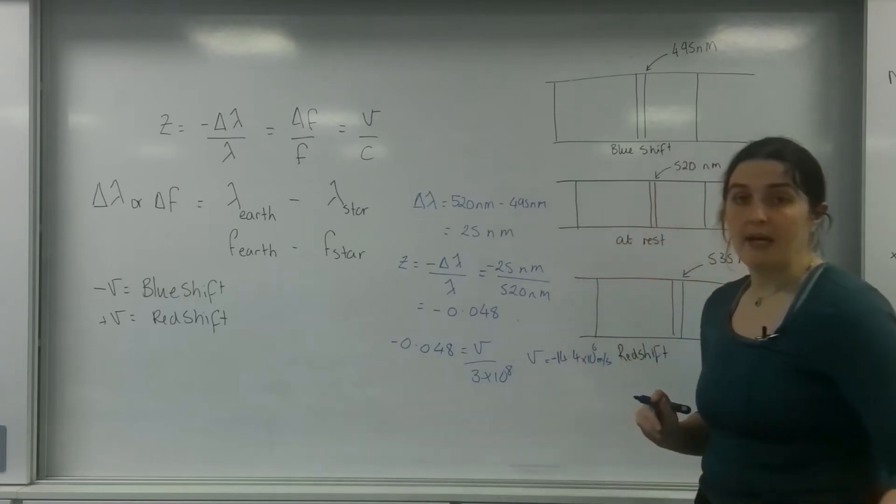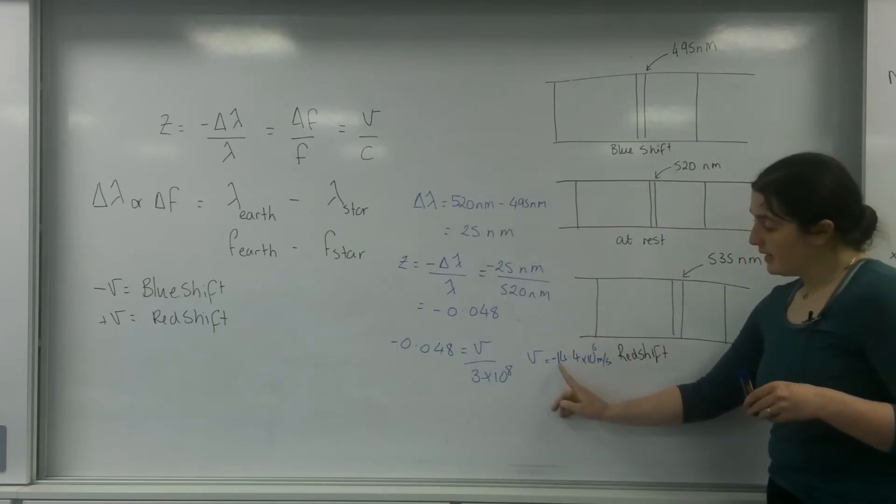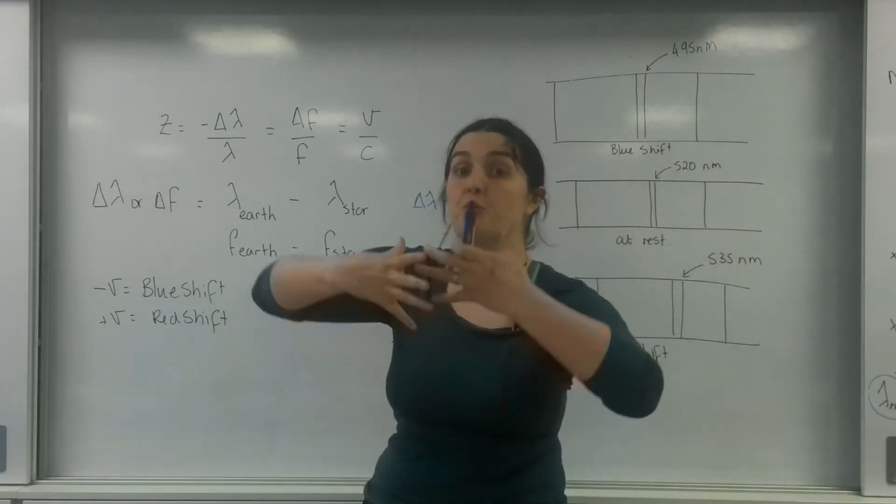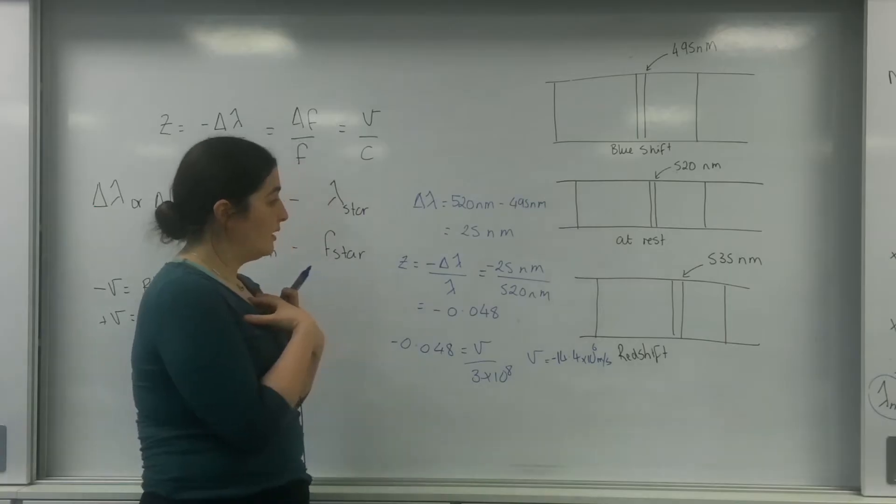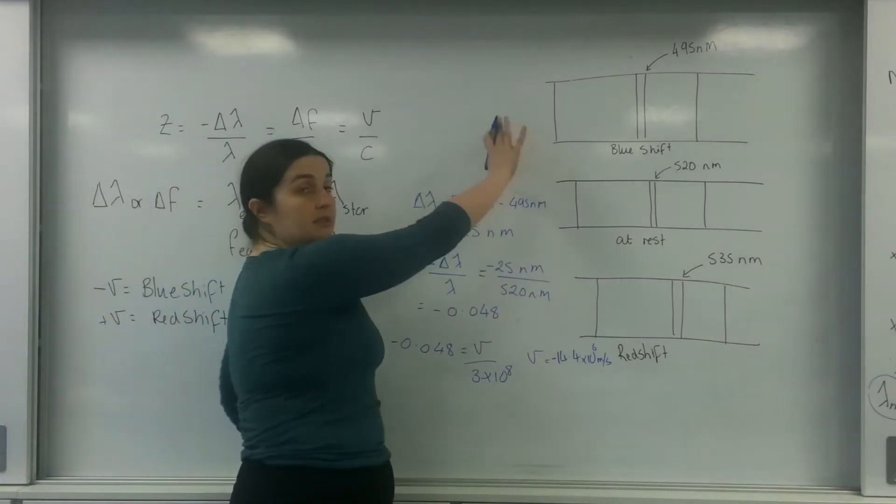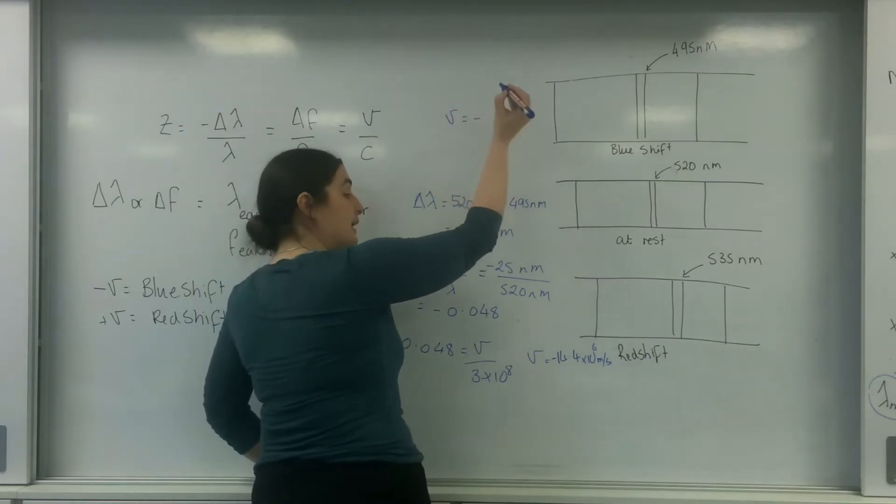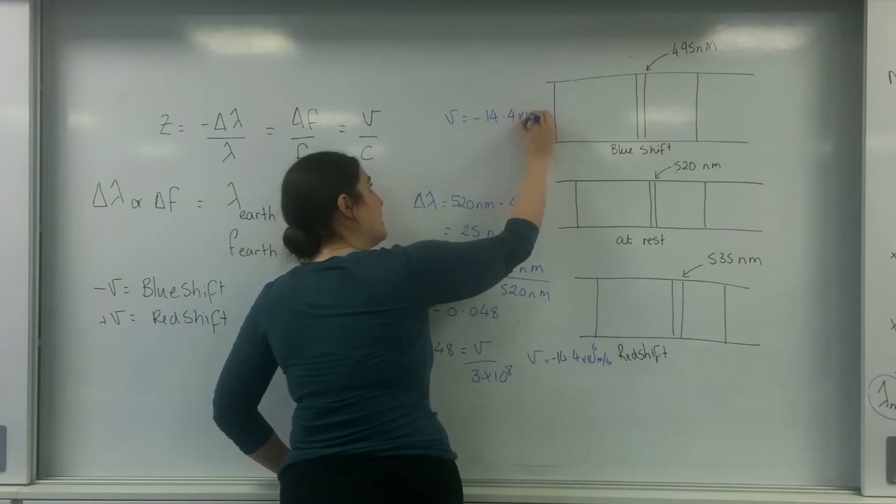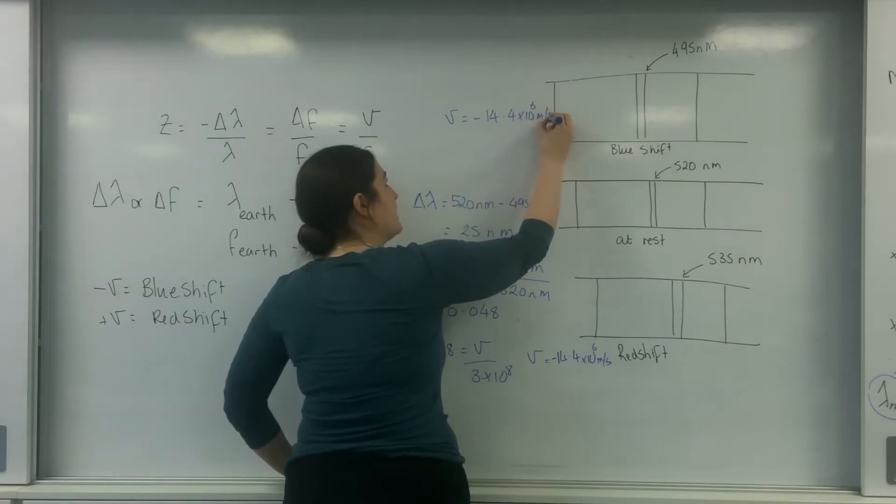And that's a negative sign. So this negative sign implies that it is blue shifting. It's moving towards me. So this object here, the star that is emitting this, is moving towards me at a speed of 14.4 times 10 to the 6 meters per second.